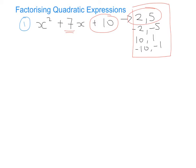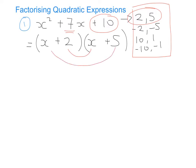Now we set up our double brackets: the equal sign goes underneath, we draw two double brackets, split the x² between each bracket as x and x, and fill in +2 and +5. To check, draw two smiley faces: 2 multiplied by x gives 2x, and x multiplied by +5 gives +5x. Adding those together gives +7x, which is the middle term of the quadratic — so we know we've done it correctly.